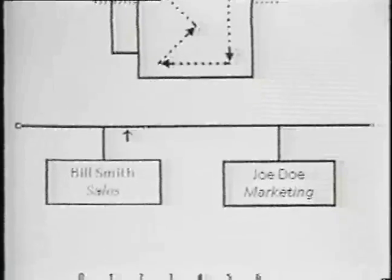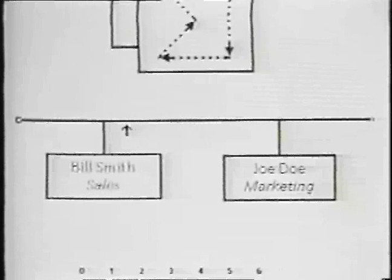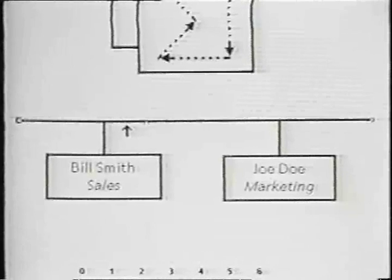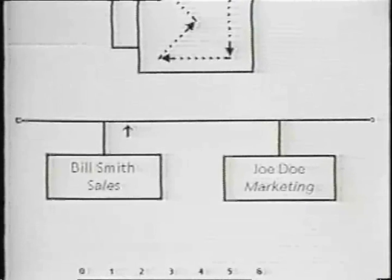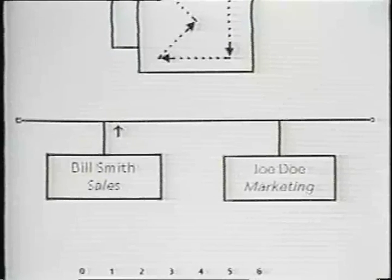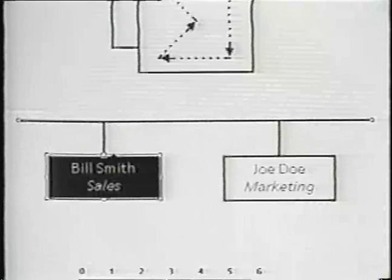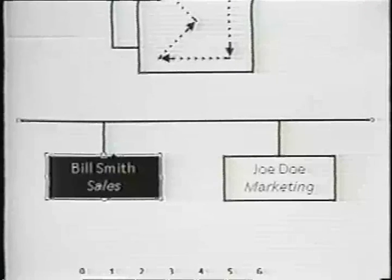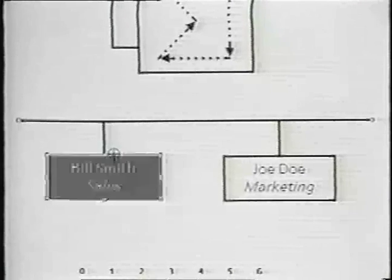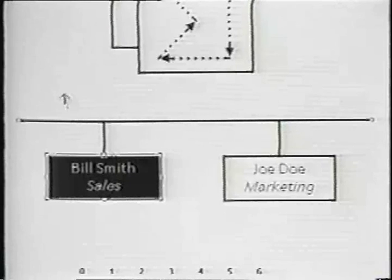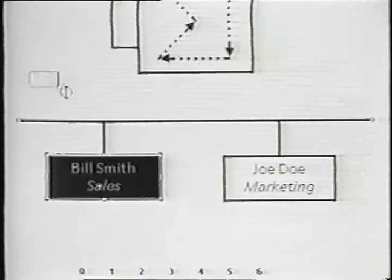It is possible to select and operate on multiple graphic objects at the same time. The Adjust Mouse Button is used to make these extended selections. One way of adding more objects to the selection is to point and click with the Adjust Mouse Button. This button is used to add and remove objects from the selection. You can also hold down the Adjust Button and draw through a large group of objects that you want to select.